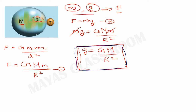What is M? M is the mass of the Earth. R is the radius of the Earth. So this is the equation of acceleration due to gravity: g equals GM divided by R squared. The unit is meters per second squared.